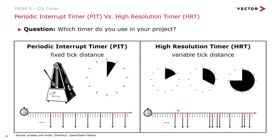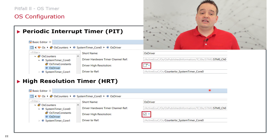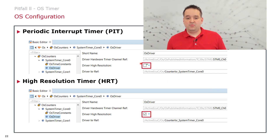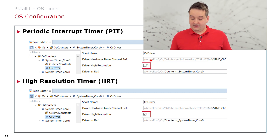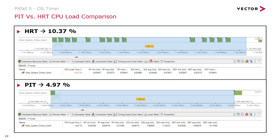With a high resolution timer, during each execution of the interrupt service routine, the timer calculates when the next ISR should be executed. In your OS container you can check a box to activate the high resolution timer or not. From a real customer project, we switched from a high resolution timer to a periodic interrupt timer because it was not needed. The high resolution timer was causing 10.4% CPU load, and switching back to a periodic interrupt timer brought us down to 5% — an instant 5% improvement with no change in system behavior.